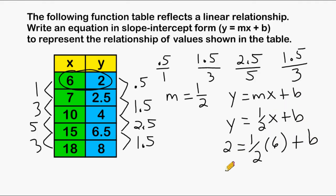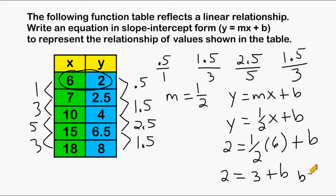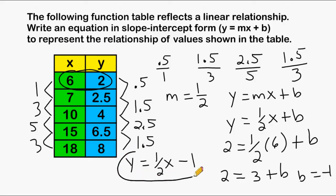We simplify this to 2 equals 1 half of 6, which is 3. Now we figure out what we would add to 3 so it equals 2 — we would add negative 1. So our b value is equal to negative 1. The equation is y equals 1 half x minus 1, which represents the linear relationship of the values in the function table.